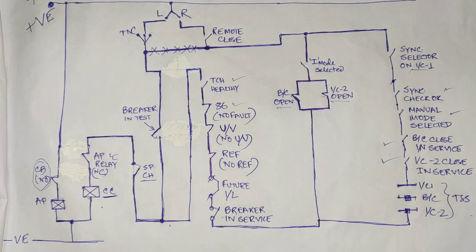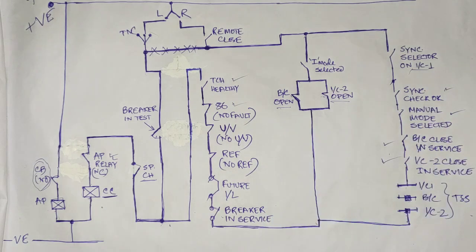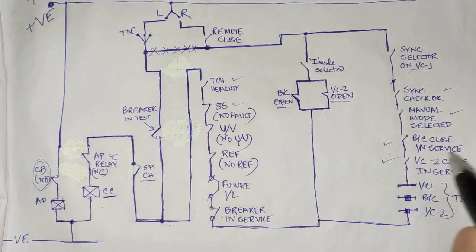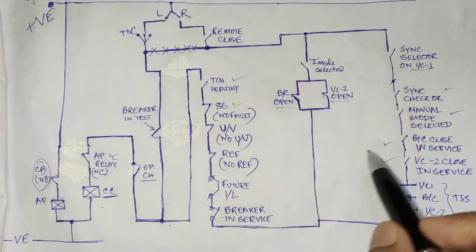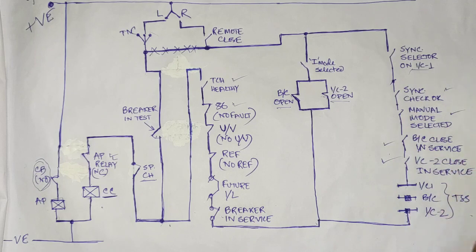We can close the breaker under two conditions: one is test position and one is service position. Under service position there are two further conditions — one is interlocked independent mode, and another is manual momentary paralleling mode.